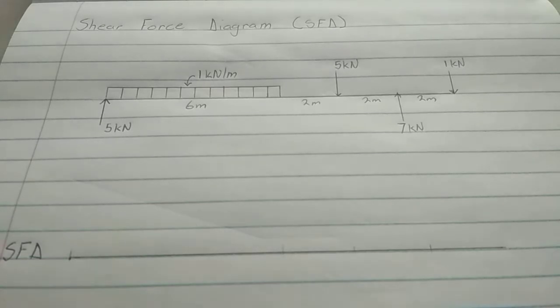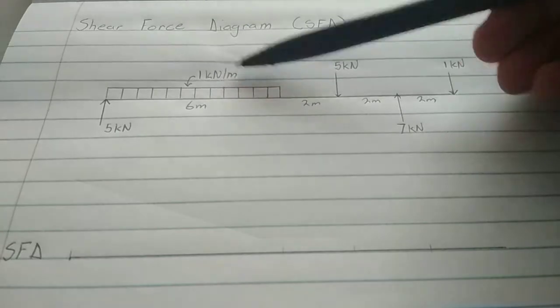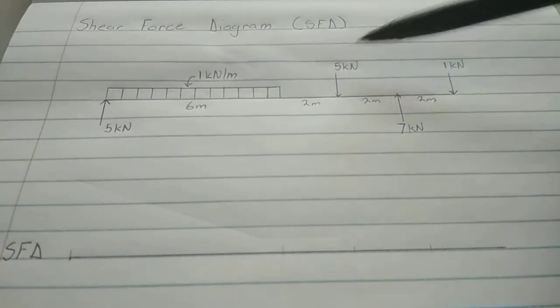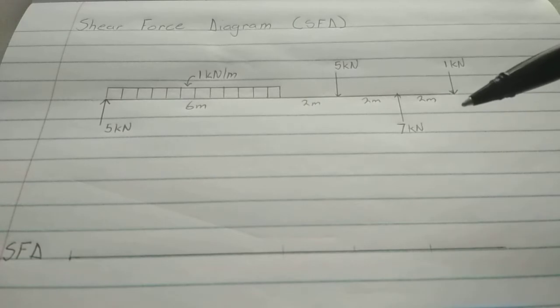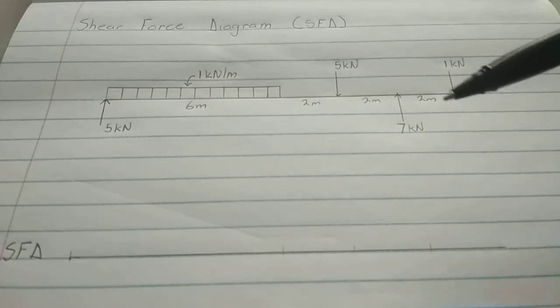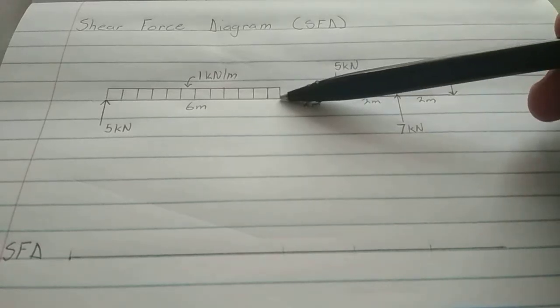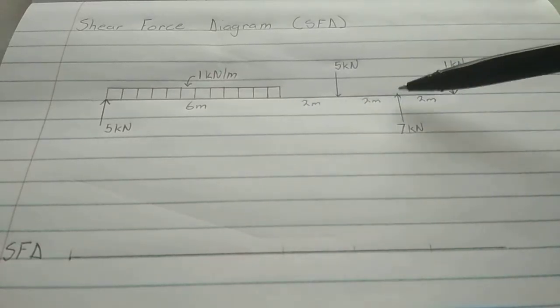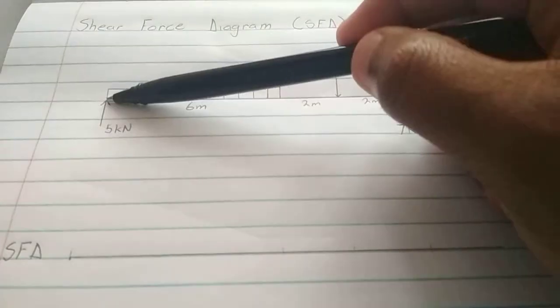Okay, we have been given forces 5 kN, 1 kN per meter, 5 kN, 7 kN, and 1 kN. So we will identify some critical points. That's the first thing to do. We have a critical point there, critical point there, critical point, and critical points at the end. That's what matters. So the first critical point is that.